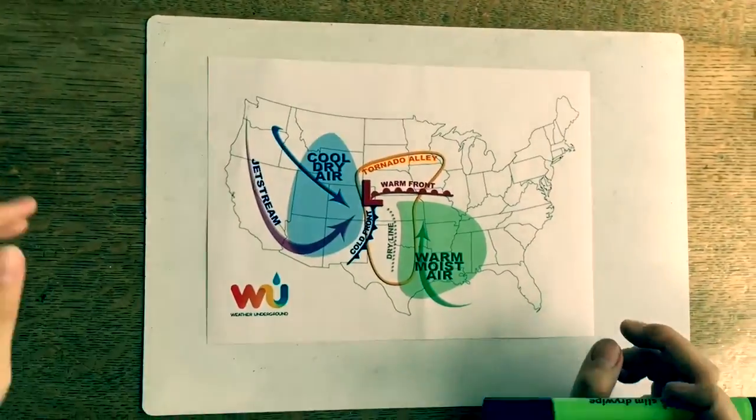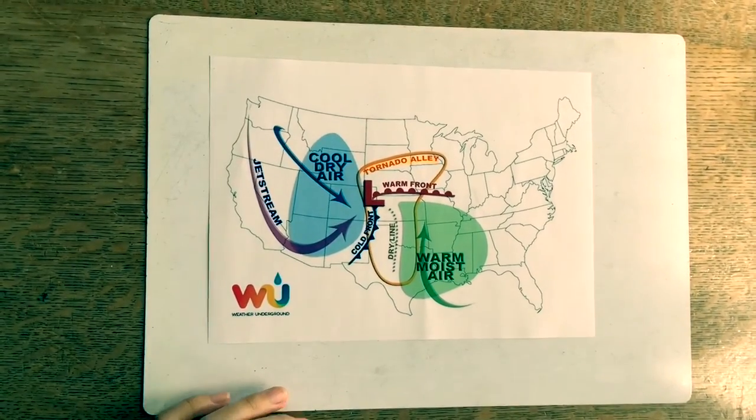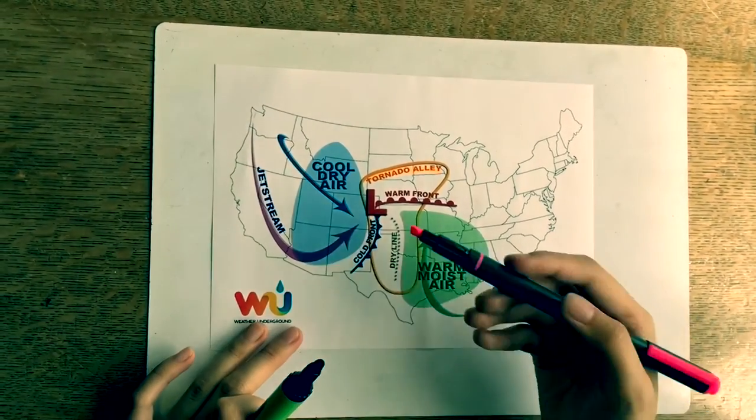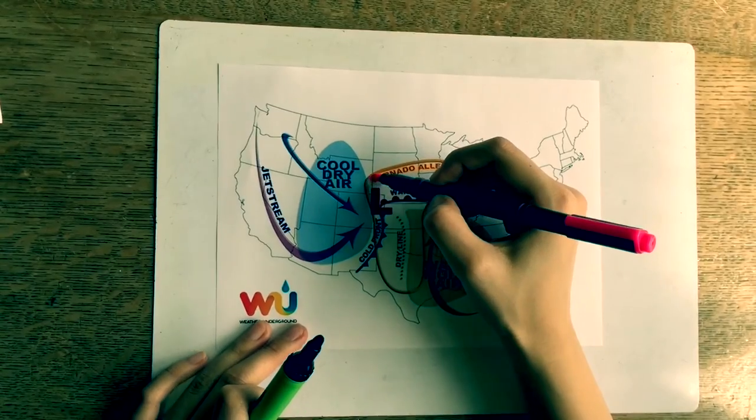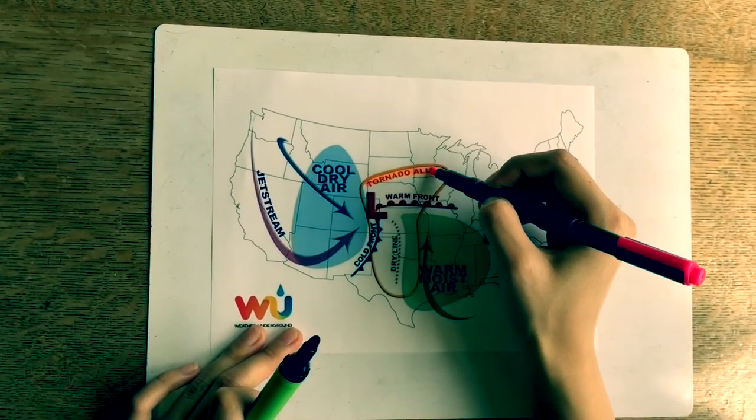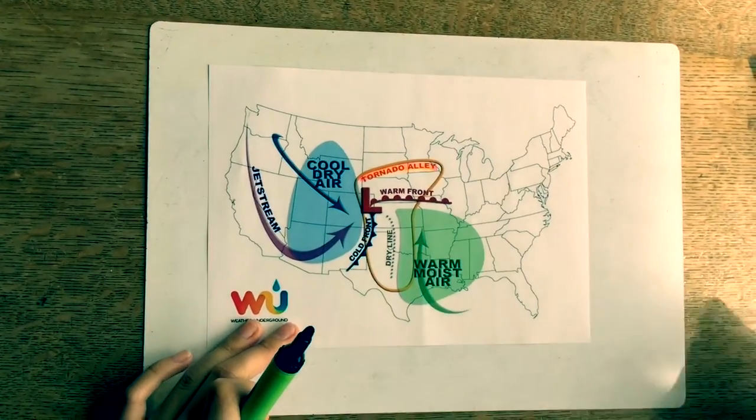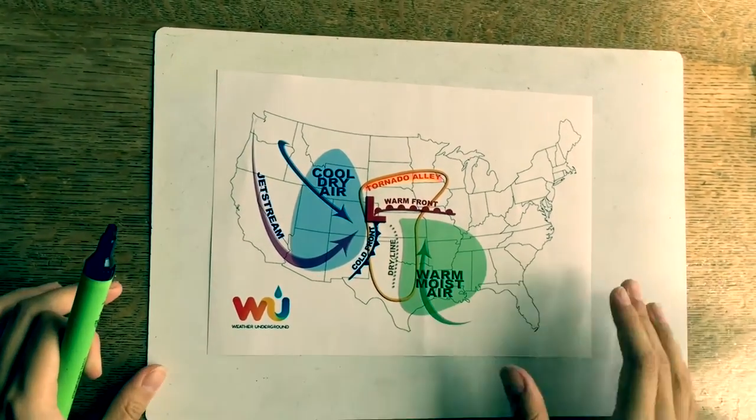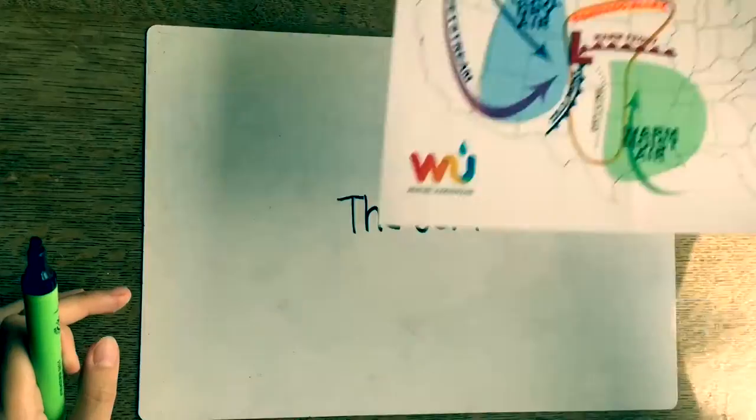Tornadoes happen every year. The majority of tornadoes occur east of the Rocky Mountains in the deep south in a region we call Tornado Alley, which is located in the Great Plains. Every region in the US has the potential to see a tornado and everyone should be prepared.